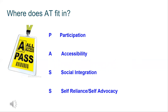The second piece is accessibility, which basically means how are students accessing the curriculum and the classroom physically. Do they need a switch to access a piece of equipment? Do they need a computer to access reading and writing? Do they need a wheelchair or a stander to move around the classroom? Have you arranged your classroom so that all students can access materials and participate in the way you're expecting?